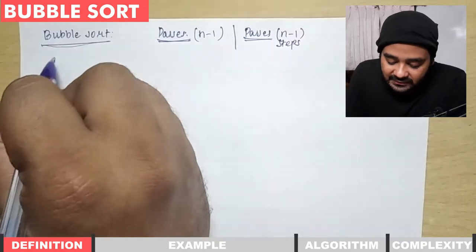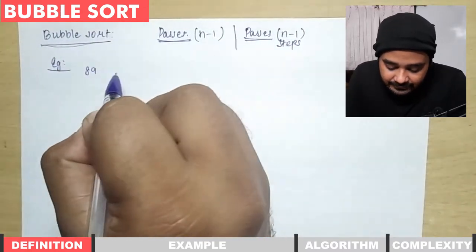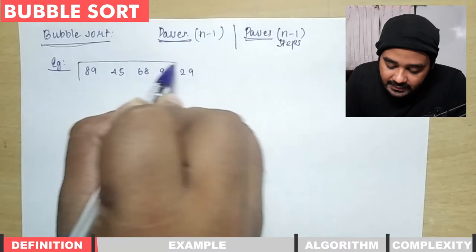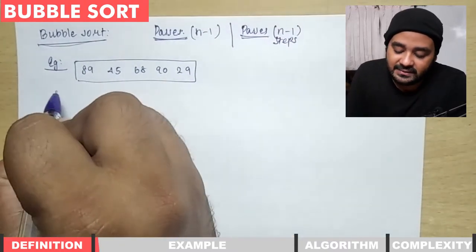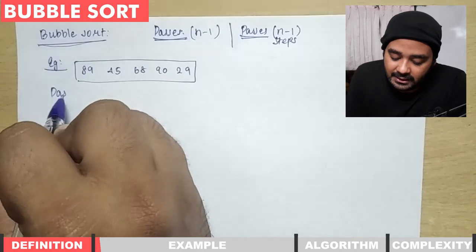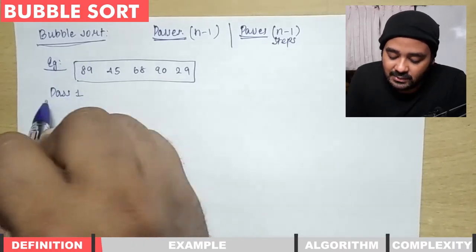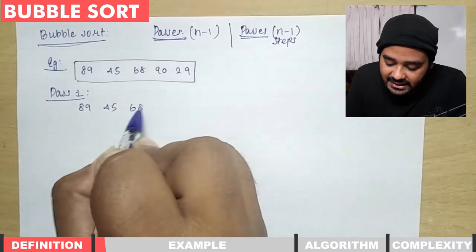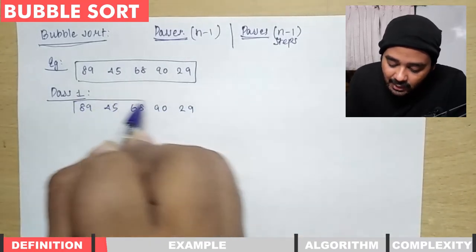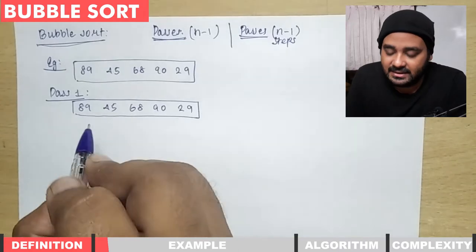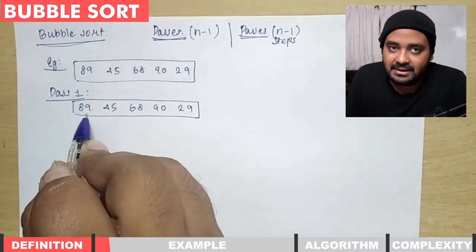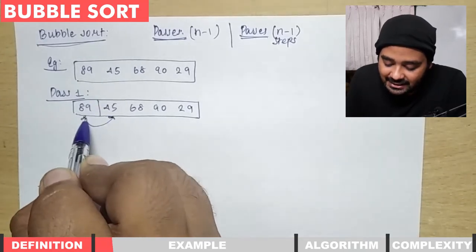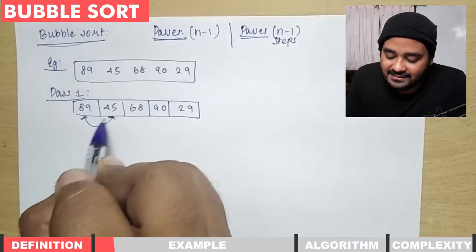Let's look at an example. Consider the list: 89, 45, 68, 90, 29. In pass one, we take the first two elements and compare them. We take 89 and compare it with the adjacent element 45. It is not in order.